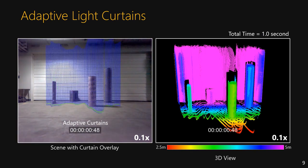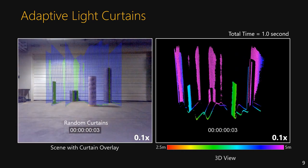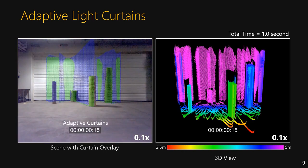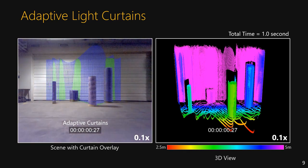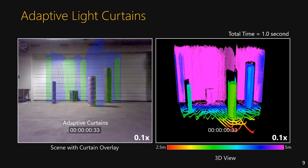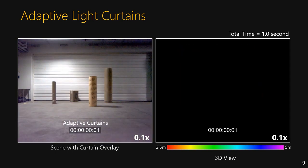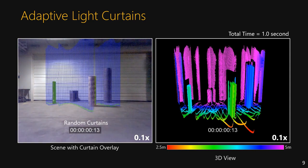An example of this adaptivity is shown here. Random curtains are first used to initially scan the scene and discover a few points. New light curtains are then fit to these detected points and swept through the volume to find more of the scene. As more of the curtains are imaged, the model is refined.